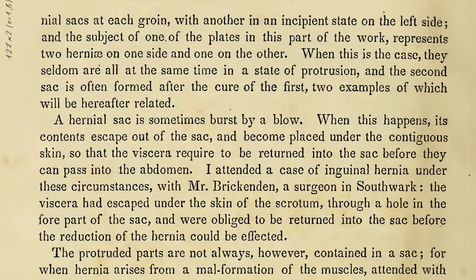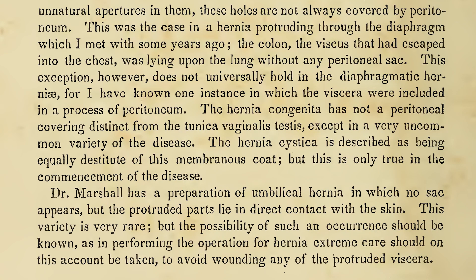A hernial sac is sometimes burst by a blow. When this happens, its contents escape out of the sac, and become placed under the contiguous skin, so that the viscera require to be returned into the sac before they can pass into the abdomen. I attended a case of inguinal hernia under these circumstances with Mr. Brookenden, a surgeon in Southwark. The viscera had escaped under the skin of the scrotum, through a hole in the forepart of the sac, and were obliged to be returned into the sac before the reduction of the hernia could be effected. The protruded parts are not always, however, contained in a sac, for when hernia arises from a malformation of the muscles, attended with unnatural apertures in them, these holes are not always covered by peritoneum. This was the case in a hernia protruding through the diaphragm which I met with some years ago. The colon, the viscus that had escaped into the chest, was lying upon the lung without any peritoneal sac. This exception, however, does not universally hold in diaphragmatic hernia, for I have known one instance in which the viscera were included in a process of peritoneum.